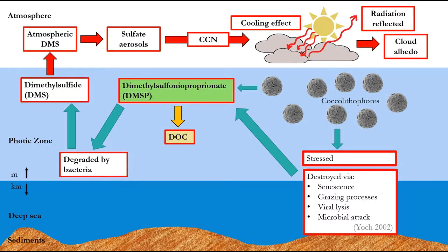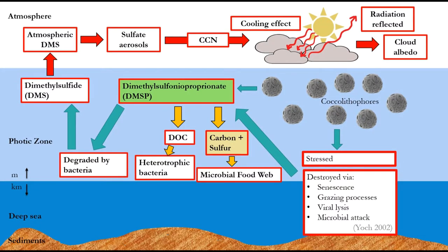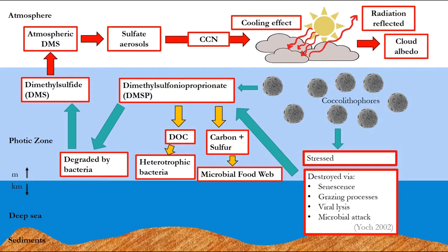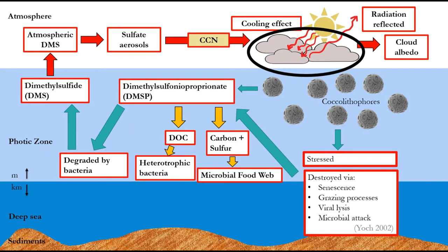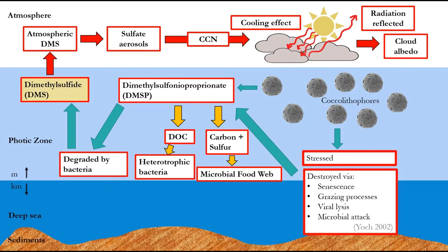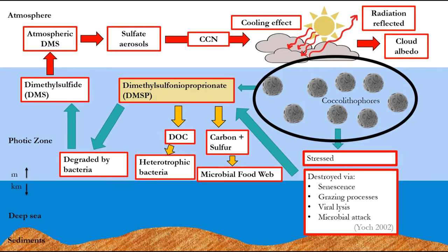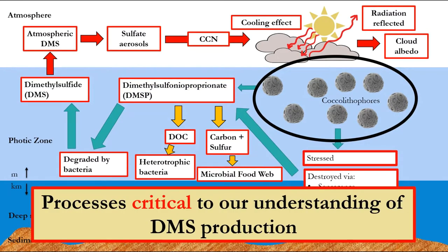Furthermore, the release of DMSP into the surrounding seawater provides substantial levels of dissolved organic carbon for heterotrophic bacteria and is a significant source of carbon and sulphur in the microbial food web in regions where coccolithophores occur. DMS plays an important biogeochemical role in the global sea to land transfer of sulphur, has the potential to affect remote oceanic weather patterns due to its ability to generate cloud condensing nuclei, and is intimately linked to the pelagic food web and microbial loop. As the bulk of DMS produced on Earth originates from DMSP produced and stored in marine phytoplankton, it is therefore critical to understand such processes that release DMS in order to understand its production.